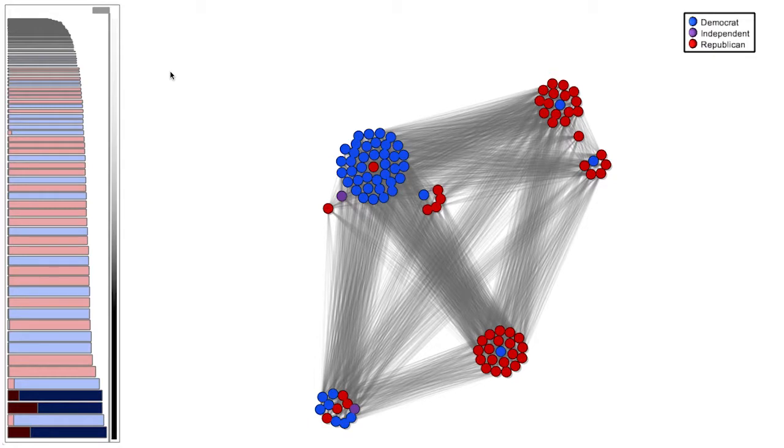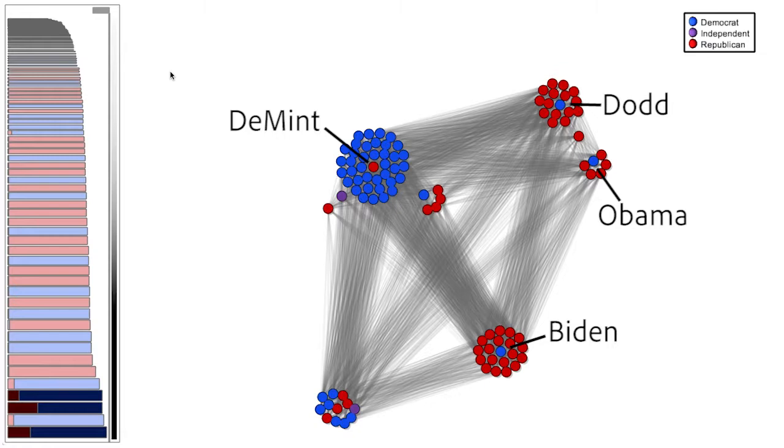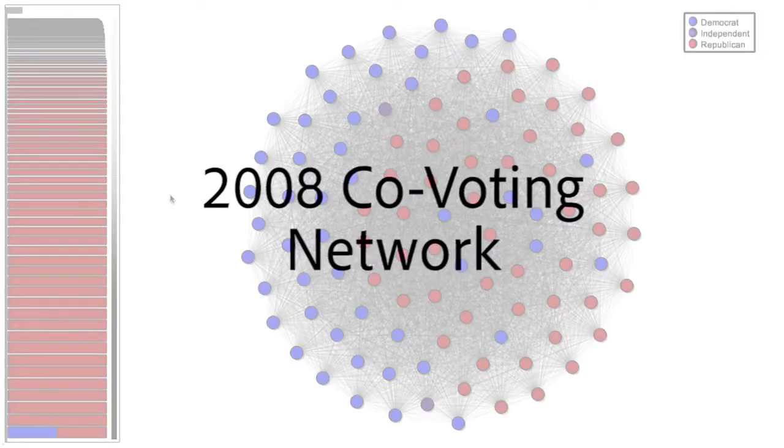Investigating these individuals, we note that these are DeMint, Dodd, Biden, and Obama. This suggests that members of the opposite party were specifically targeting these individuals to vote against.